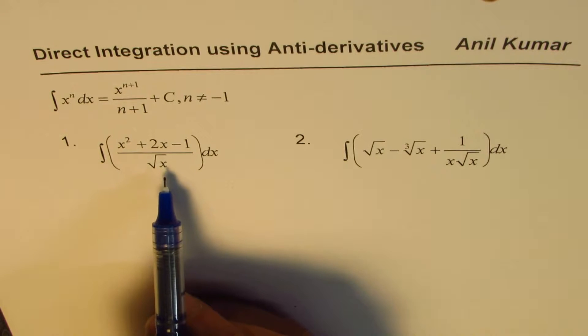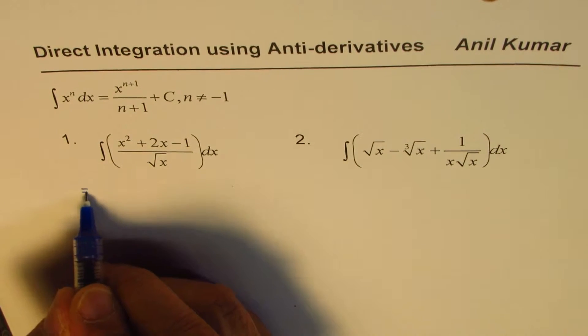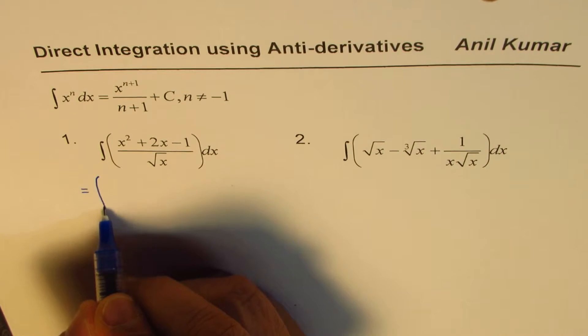Now, we do not have quotient rules here. So what you do here is that you expand and simplify. So that is the strategy.